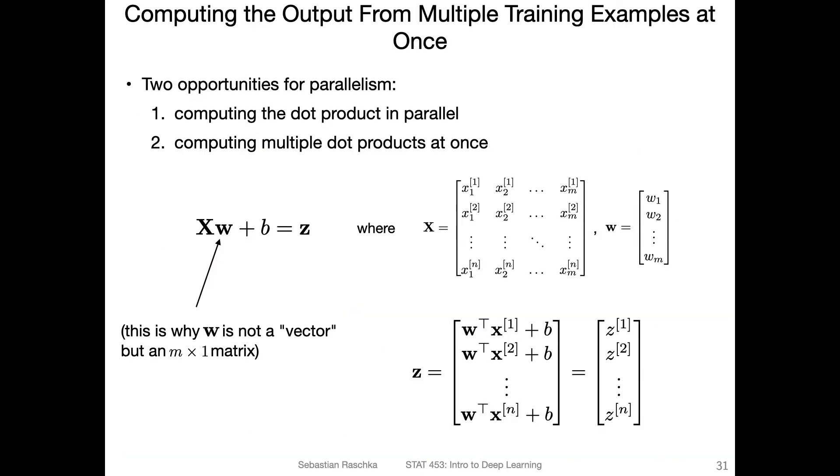Like I mentioned, there are these two opportunities for parallelism. Here's a more concrete example, computing the net input. Instead of having a single feature vector, we have now this matrix, the design matrix, which is n times m matrix x. n is the number of data points, m is the number of features. And w is a m dimensional vector. The output of this would be n times one. The output of multiplying x and w would be n times one dimensional vector.